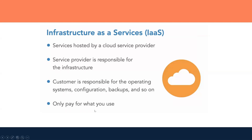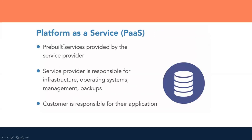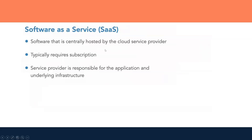With Platform as a Service, you get pre-built services from the provider. The service provider is responsible for infrastructure, operating system, management, and backup. The customer is only responsible for their application. With Software as a Service, the customer's responsibility is minimal — the application is hosted on the cloud service provider's infrastructure, and customers simply subscribe and use the application.